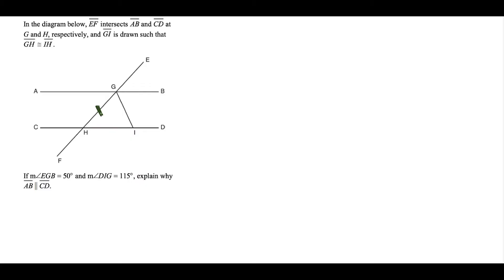For the next question, line EF intersects AB and CD at G and H respectively, and GI is drawn such that GH is congruent to IH. The measure of angle EGB is 50 degrees, and the measure of angle DIG is 115 degrees. The task is to explain why AB is parallel to CD, which should be the last conclusion we state.